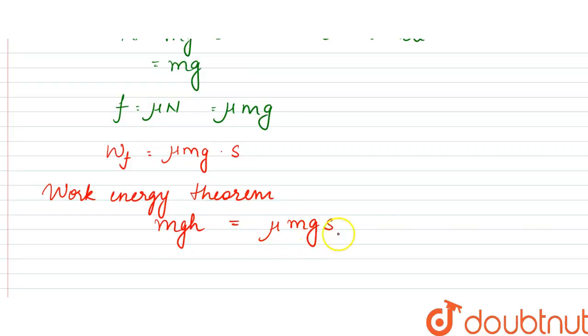The total work done should be equal to zero, so mgh minus this would be equal to zero, so both would be equal. mg gets cancelled, so h would be equal to mu s.